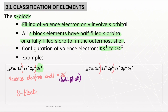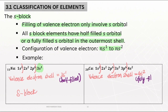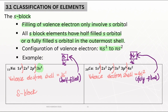For example 2, calcium: we draw the border and find that the valence electron shell is 4S2, which is a fully filled S orbital. A half-filled S orbital has one electron in the orbital, while a fully filled S orbital has two. Because the valence electron shell is 4S2, calcium belongs to the S block.